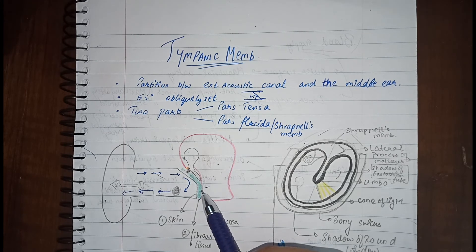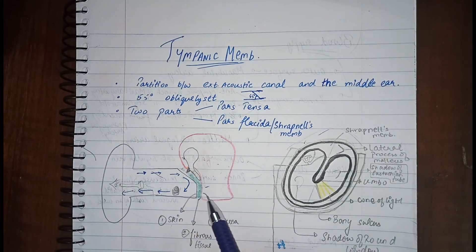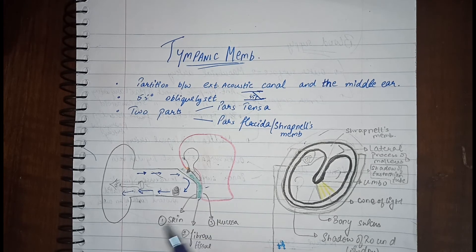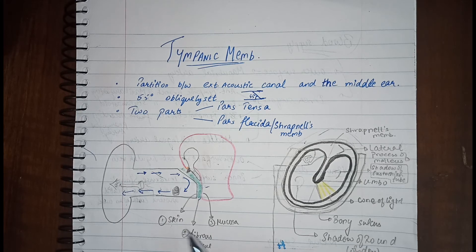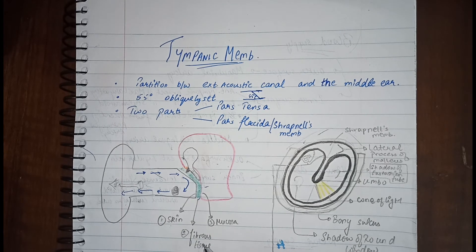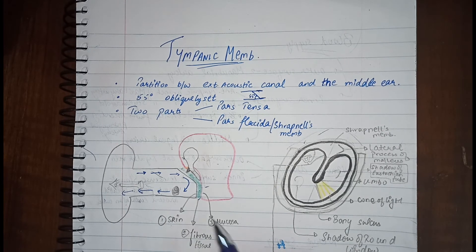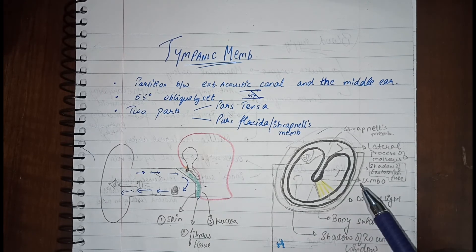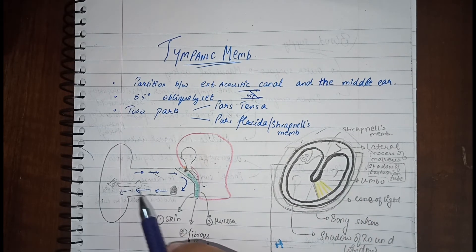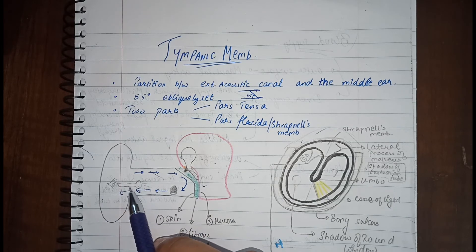The innermost layer is made up of mucosa, which is just a continuation of the mucosa of the middle ear. It is also notable that the tympanic membrane contains all three germ layers: the skin is derived from the ectoderm, the fibrous tissue from the mesoderm, and the mucosa from the endoderm.